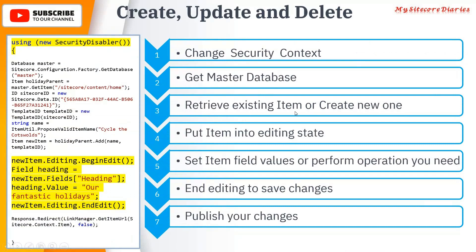Step three is to retrieve the existing item or create a new item. An item can be retrieved by its path or by ID. If you want to create a new one, you will need the parent item where you want to create the child item. Step four: if you want to edit that item, you have to use the editing state — item.Editing.BeginEdit() puts the item into editing state. Without that, it is read-only and you cannot change the value.